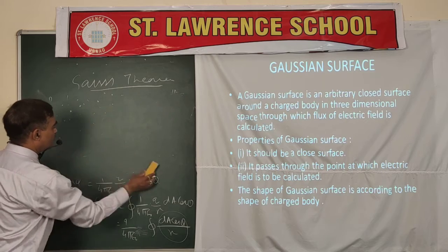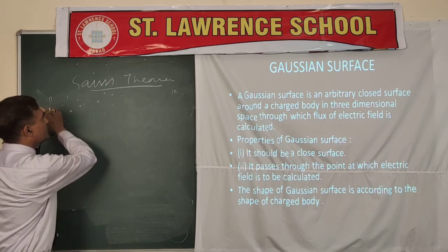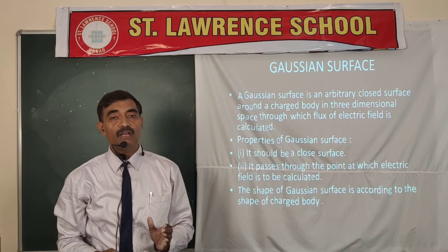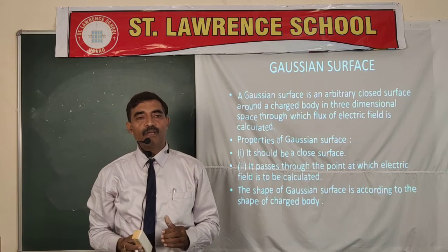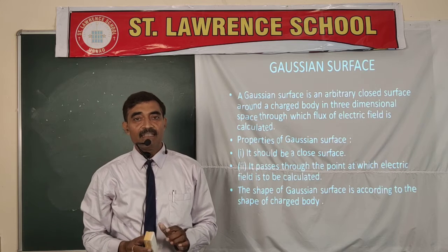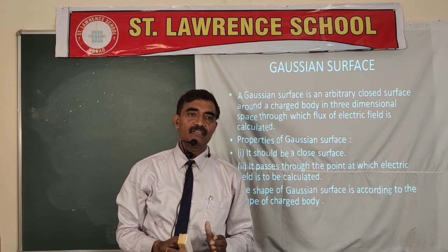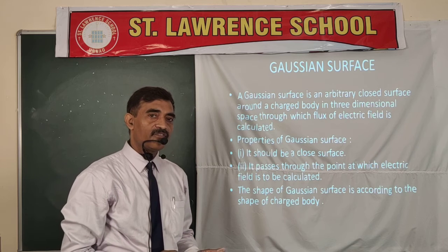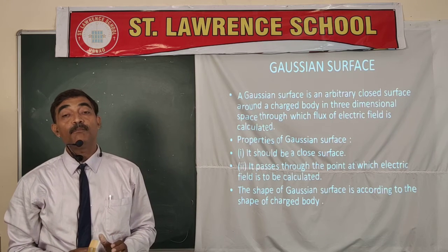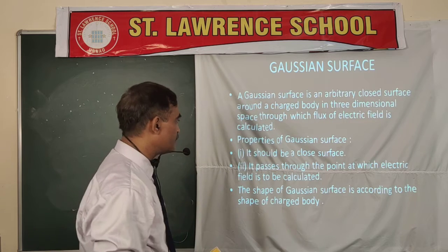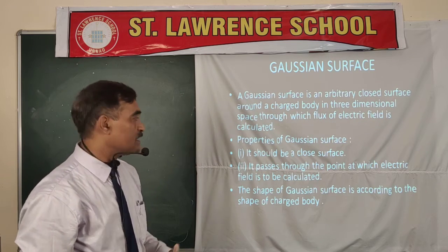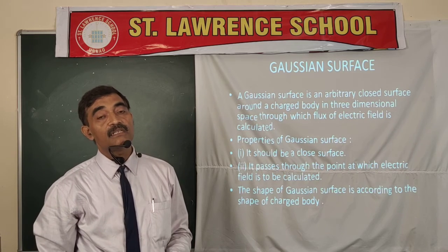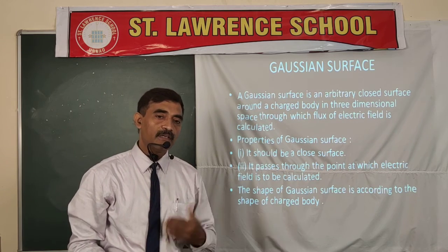There is a term called the Gaussian surface. Whenever we calculate the electric field, we have to draw an imaginary closed surface. An important requirement for the Gauss theorem is that it is applicable only for a closed surface. So whenever we calculate the electric field through a charged body, we draw a Gaussian closed surface around that charged body which passes through the point at which we want to calculate the electric field. The Gaussian surface must be closed, must pass through the point of interest, and its shape depends on the shape of the charged body.